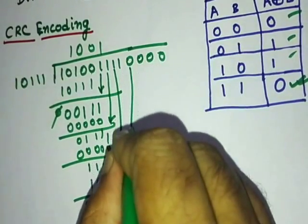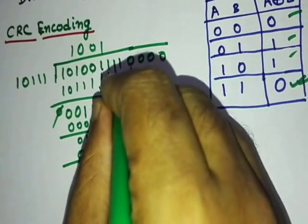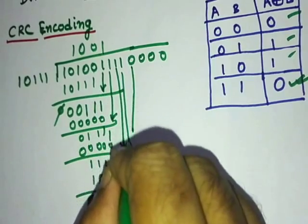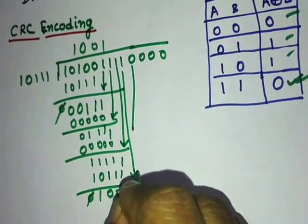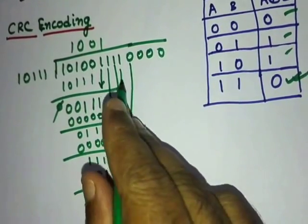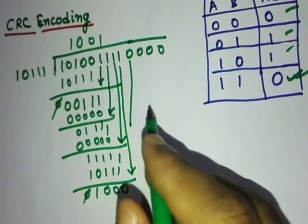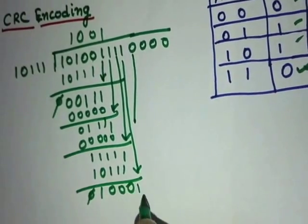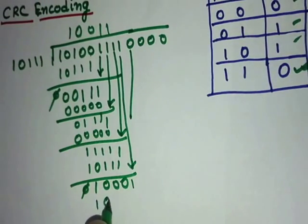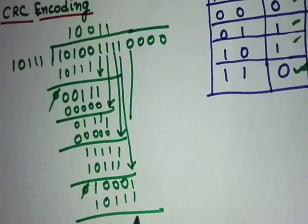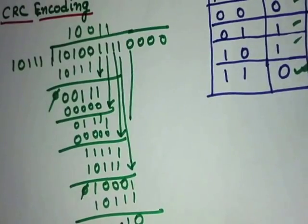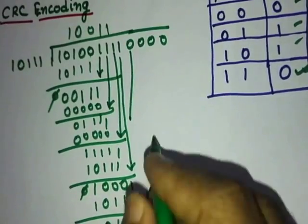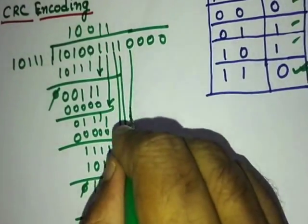Now we take the next bit — and here is a mistake you can make. Instead of taking a 1, you might accidentally take a 0. That is what I want to highlight here, so be careful with your alignment at this step.